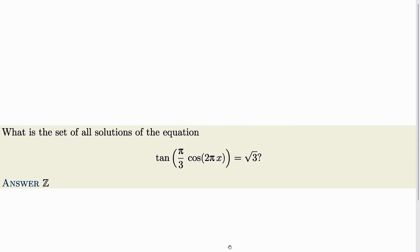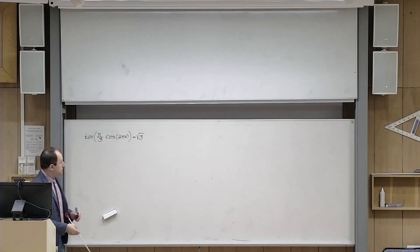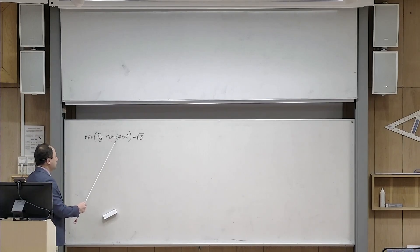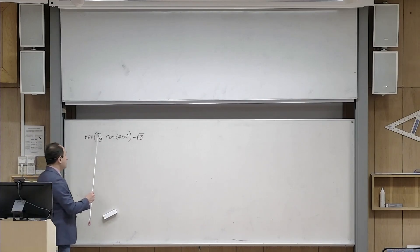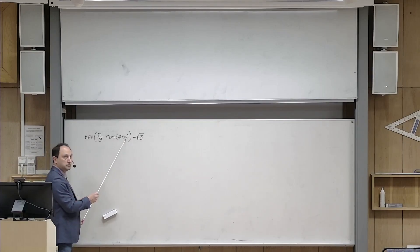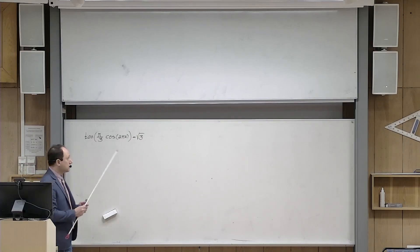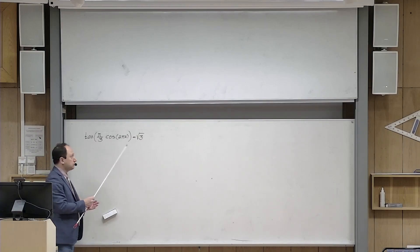Let us now start solving the problem. So this is the problem that we are supposed to solve. Tangent of pi over 3 times cosine 2 pi x equals 2 square root of 3. What is important here is to note that the whole expression plays the role of the argument or the angle in front of tangent. You put a number x here, calculate cosine of this combination, multiply by pi over 3, and then calculate the tangent of that particular number in radians.